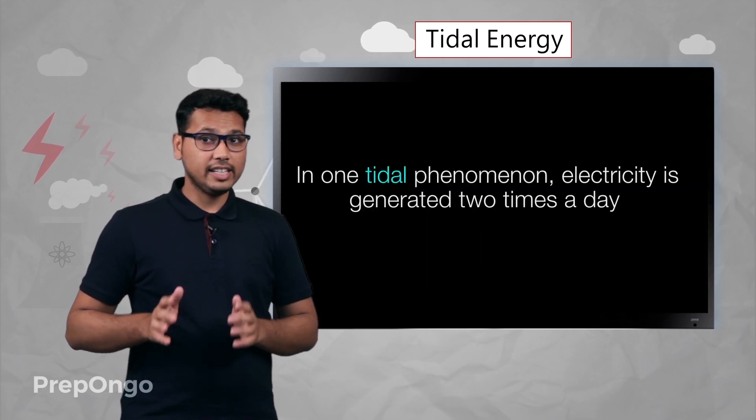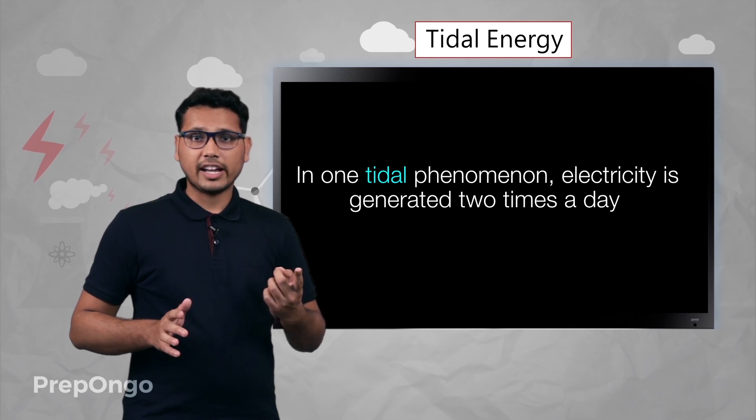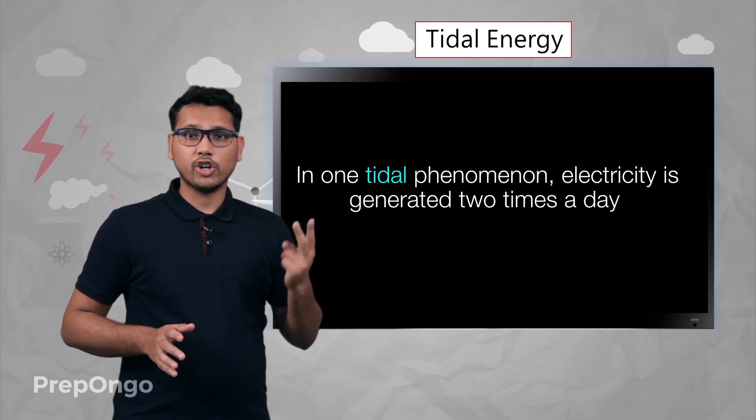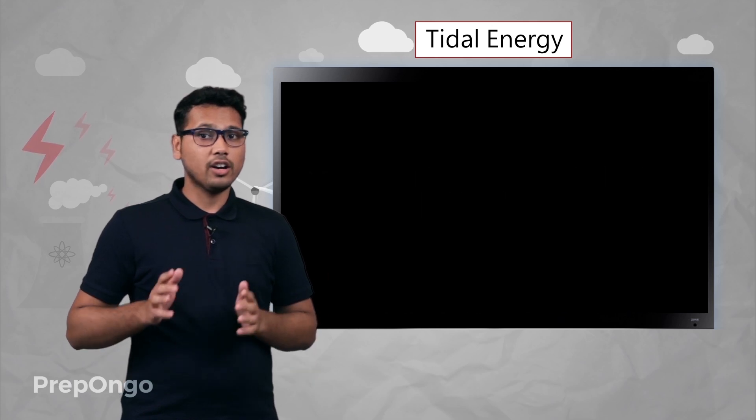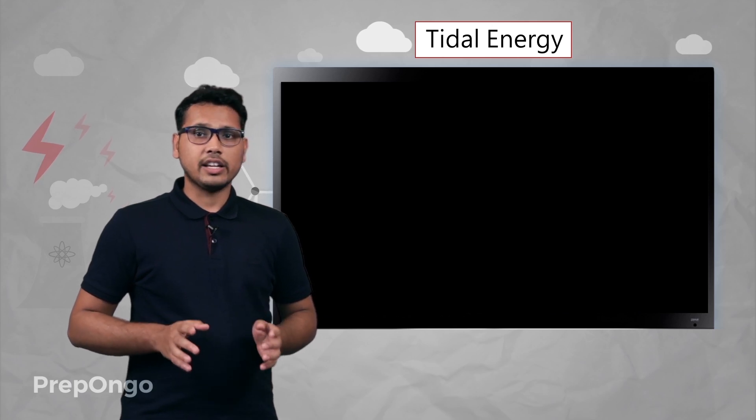So we can see that in one tidal phenomenon, we are getting electricity two times. So in all, in a day, we will get electricity four times as two tides occur in a day.